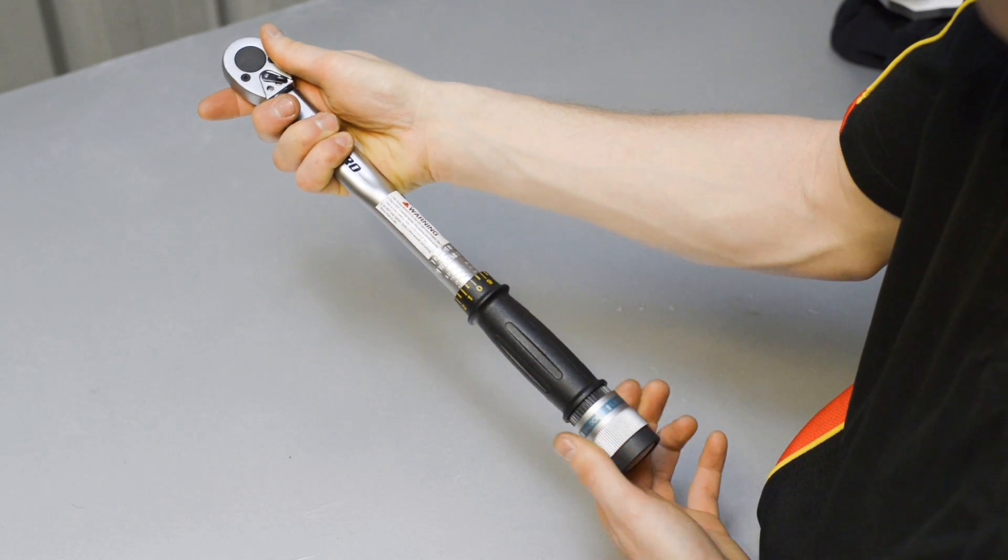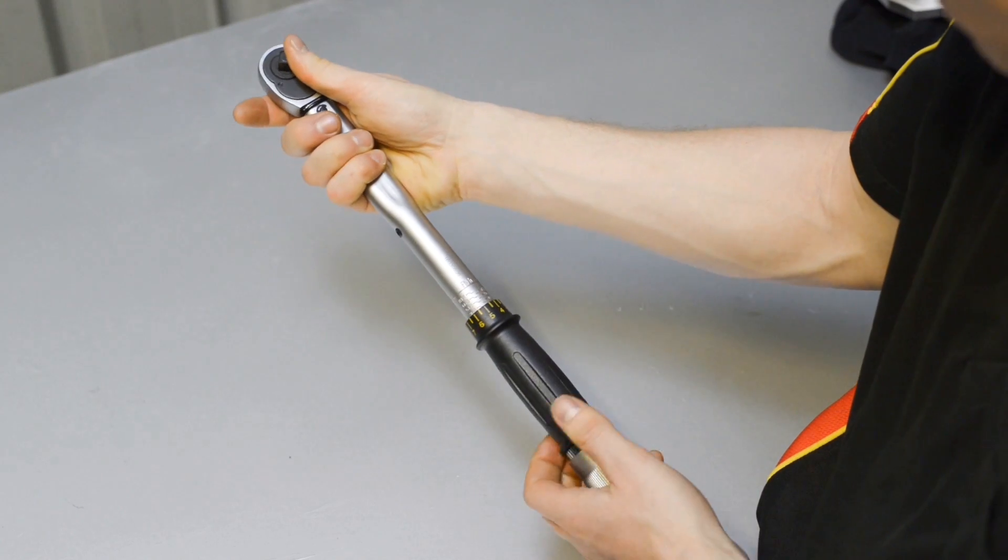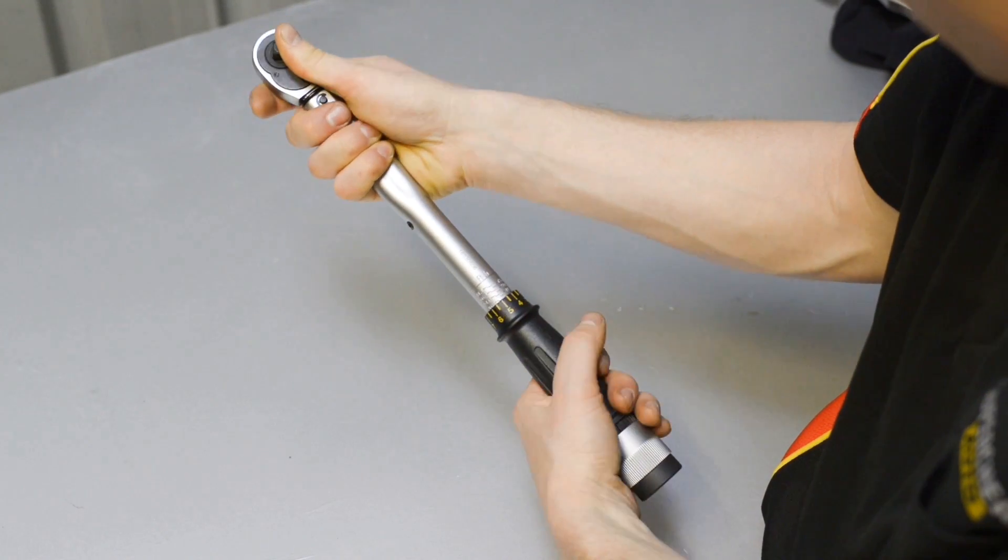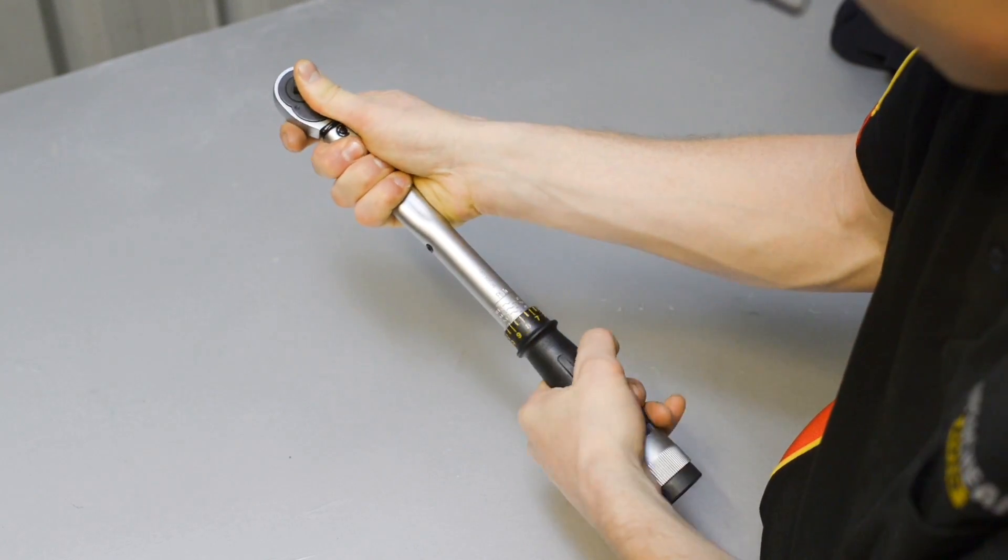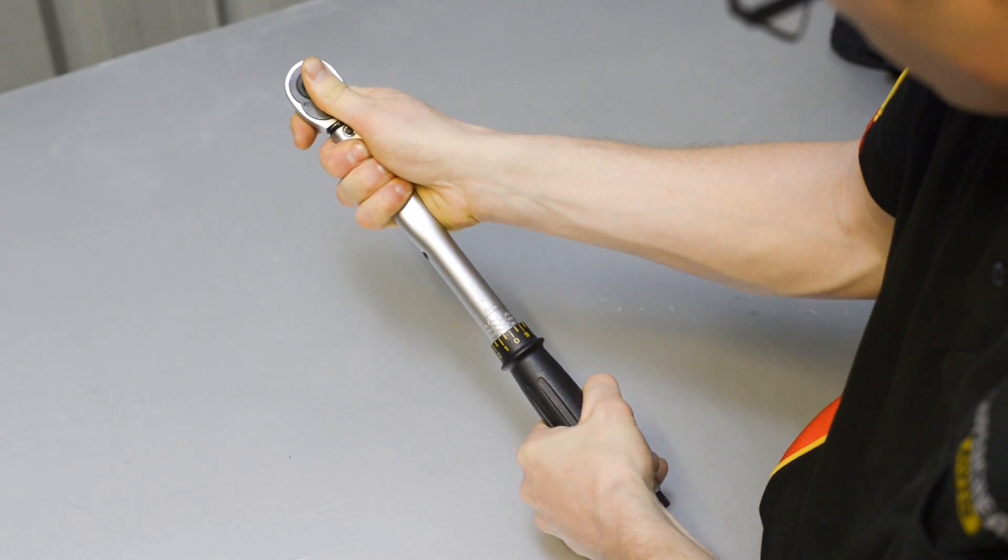The process for setting the torque measurement is virtually the same as with the half-inch model. But once the closest value is reached, the single increments step up half a Nm at a time.